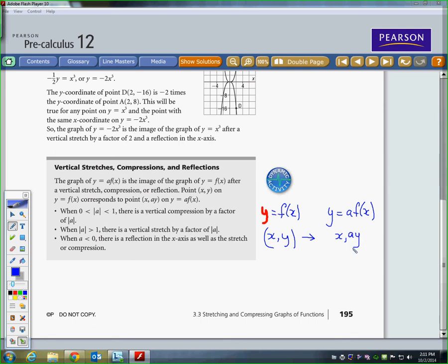So, if for example, if the original function, if 1 comma 2 was one of the points, and let's say that this a value was equal to negative 3. Then over here we would get 1 comma negative 6. So this point would, you'd notice the two things happening, you'd get the reflection because of the negative and also the stretch because it's larger than 1.